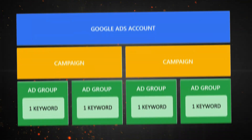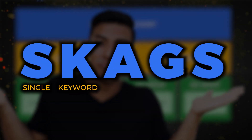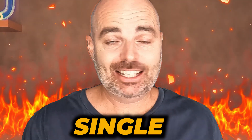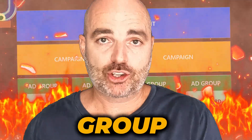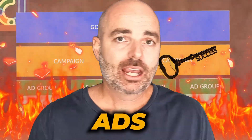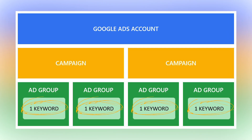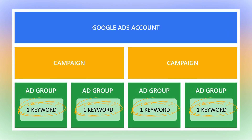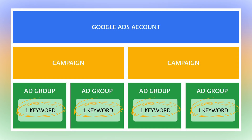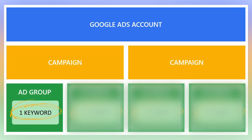You need to stop using SKAGs in Google Ads. And if you have no idea what I'm talking about, that is single keyword ad groups. For many years, a single keyword ad group structure was the core key to success in Google Ads. The reason for that is because you could have one individual keyword in your individual ad groups, and then very quickly turn off underperforming keyword themes.